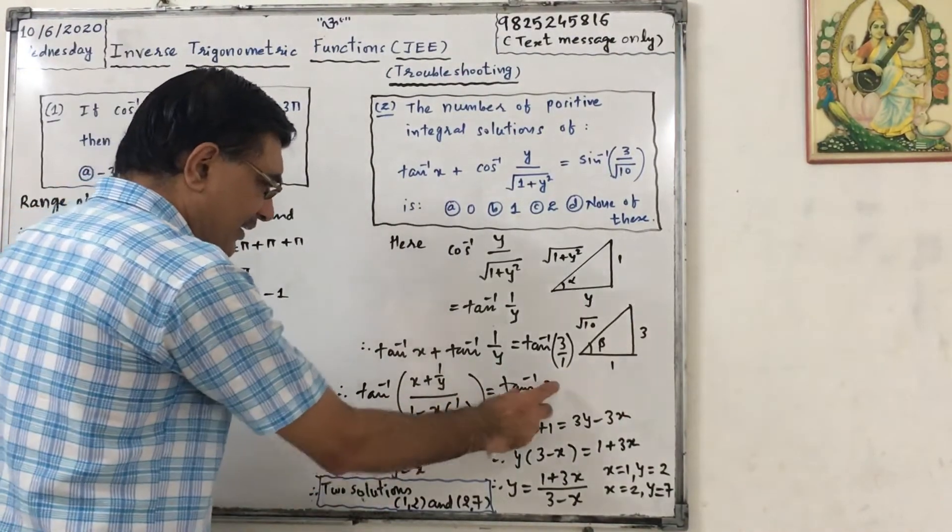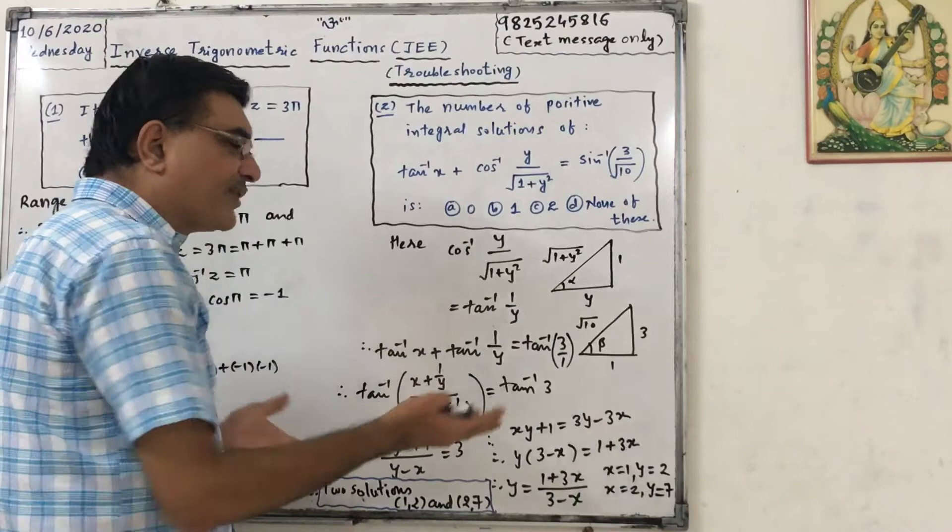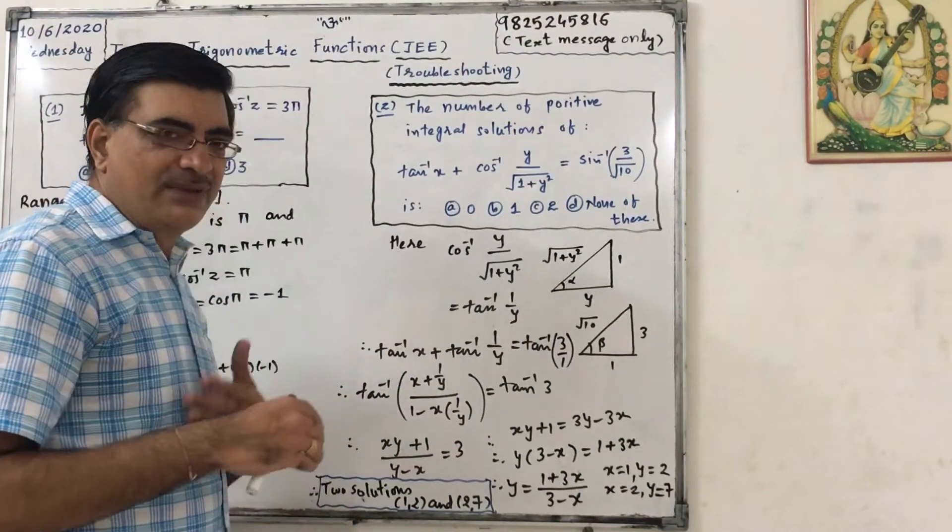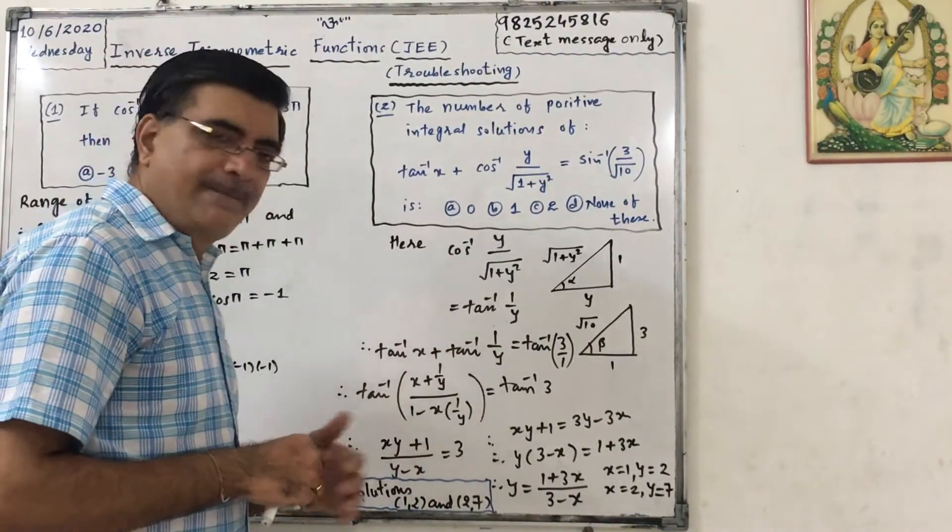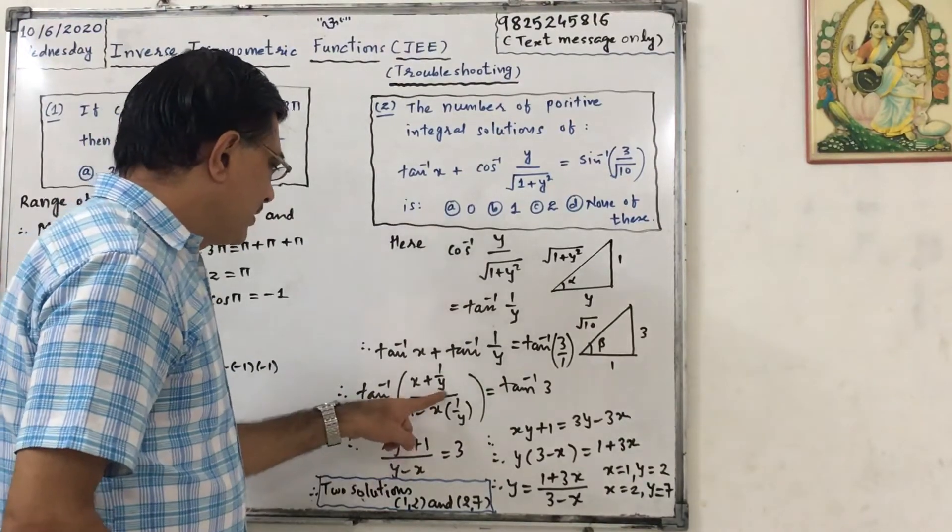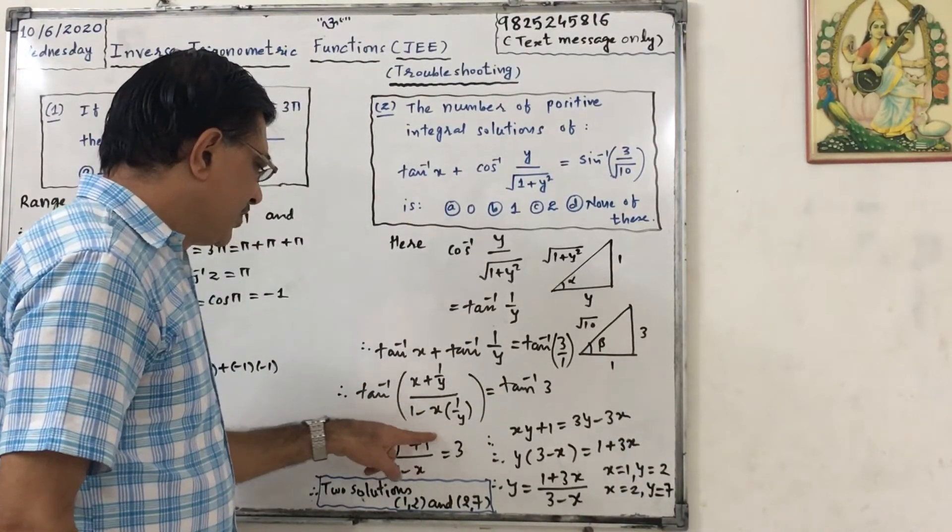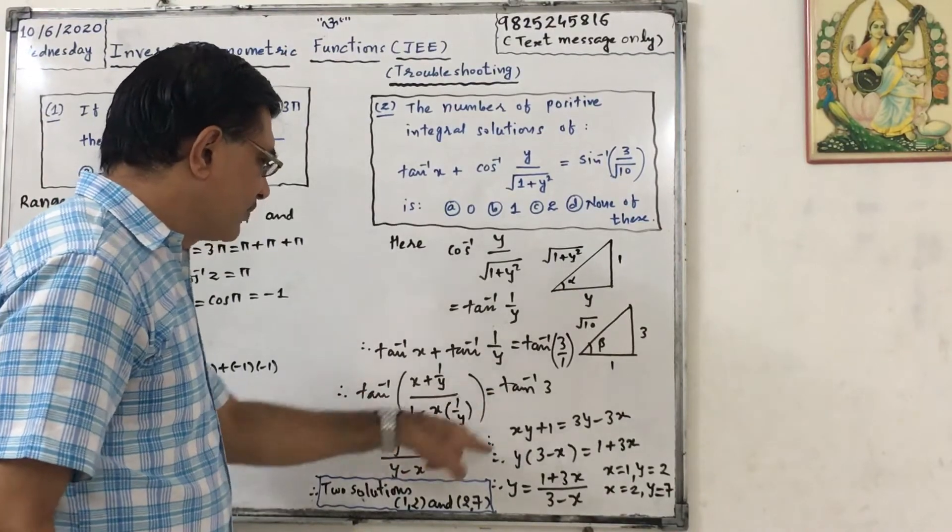Comparing this, okay, in other words taking tan both sides. Okay, so tan of tan inverse will give us identity function. Similarly here. Okay, so xy plus 1 upon y minus x, denominators will be cancelled, equals to 3.